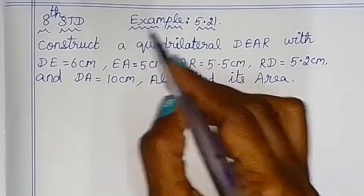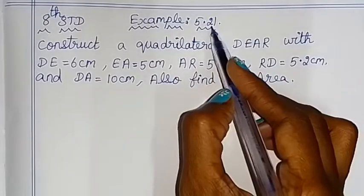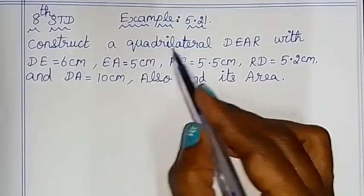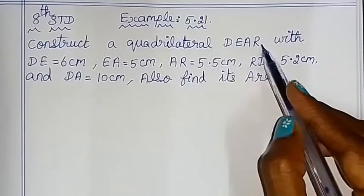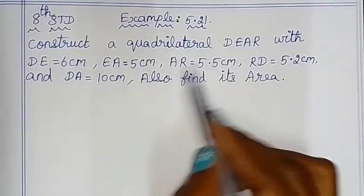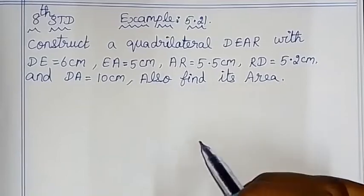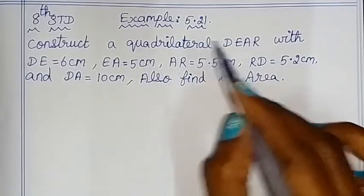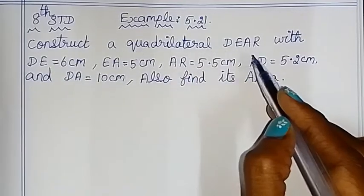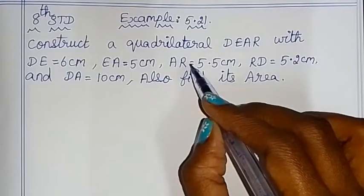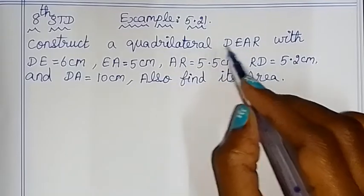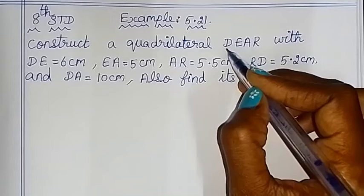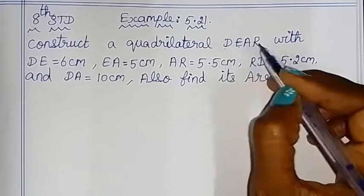Hello children. I will show you example 5.21: construct a quadrilateral D-E-A-R with the given measurements and also find its area. A quadrilateral is a 4-sided closed shape, and the order here is D-E-A-R.